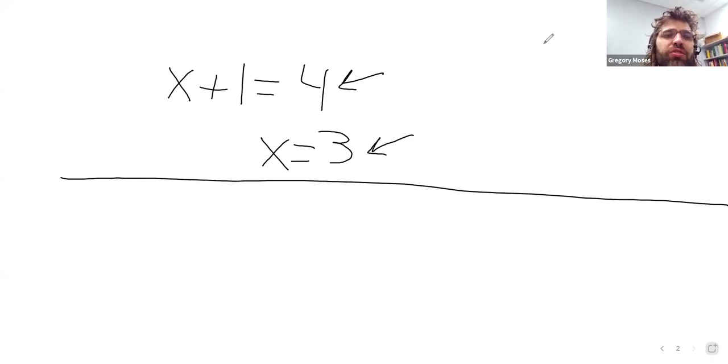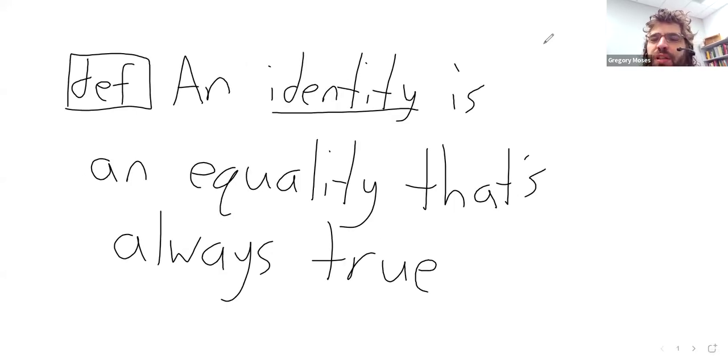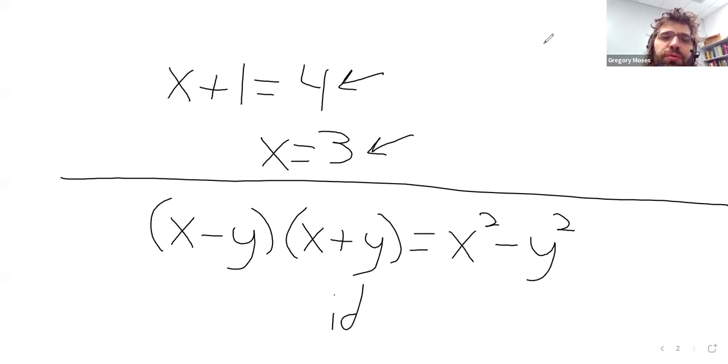Now compare that to the following statement: x minus y times x plus y equals x squared minus y squared. This statement is always true. It doesn't matter what x and y are. And again, a statement that's always true is called an identity.